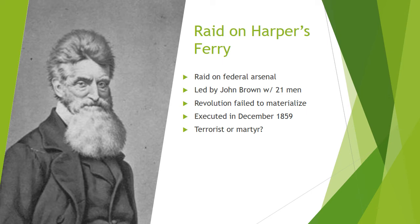As news spread of the sensational raid, reports inflamed the conspiratorial views that the slave South and free North had of each other. Pro-slavery advocates saw Brown as a madman and a terrorist and contended that the North intended to destroy their way of life, while Black and white abolitionists lauded Brown and his comrades as martyrs. Before his execution in December of 1859, Brown handed a note to his jailer in which he predicted that slavery would not end without very much bloodshed. John Brown was executed just a couple of months after the raid on Harper's Ferry.